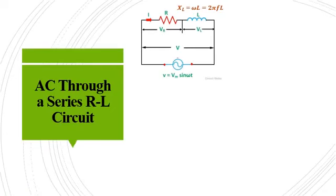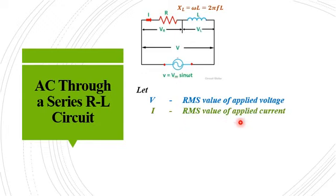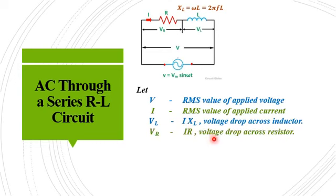Consider the RL circuit given in the figure. A resistance of value R and an inductance of value L is connected in series across a supply voltage of Vm sin(ωt). If the inductance value is L then the inductive reactance XL is obtained as ωL or 2πFL. Let V be the RMS value of the applied voltage, that is V equals Vm by root 2, and I be the RMS value of the applied current. The voltage drop across the inductor VL equals I times XL, and the voltage drop across the resistor Vr equals I times R.